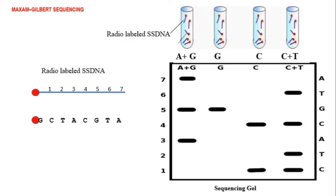This figure explains how we perform Maxim-Gilbert sequencing. We isolate the DNA, make it into single-stranded DNA, label that single-stranded DNA, and then distribute the radio-labeled single-stranded DNA into four tubes. In each of these four tubes, a specific reaction will take place.